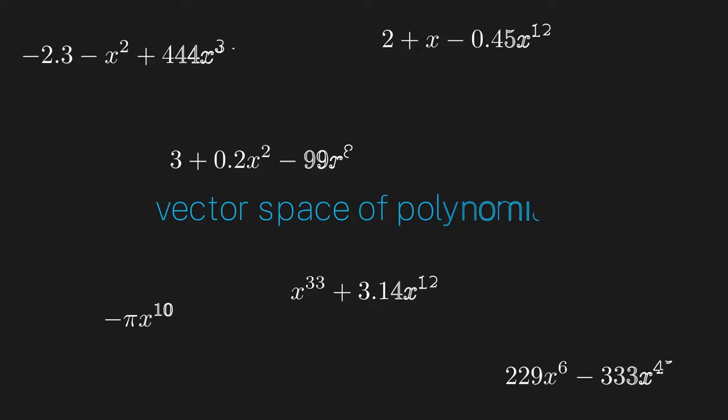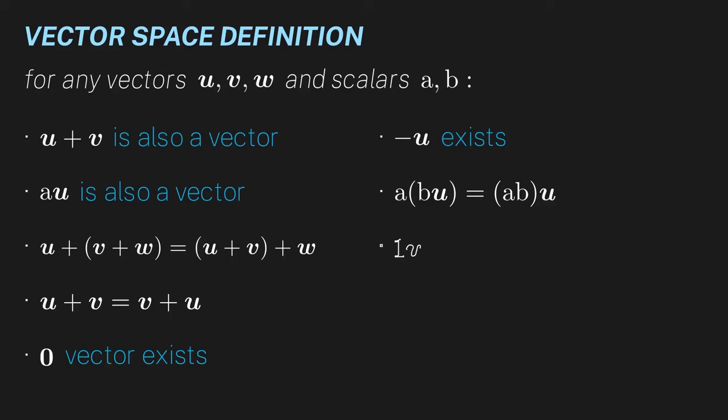Let us look at the vector space of polynomials over the real numbers. Remember from last episode that a set of objects constitutes a vector space if they satisfy the following rules.